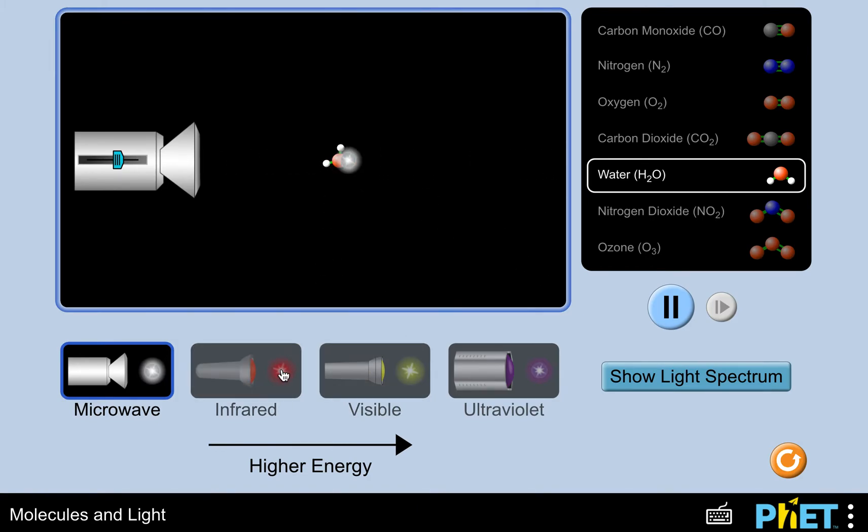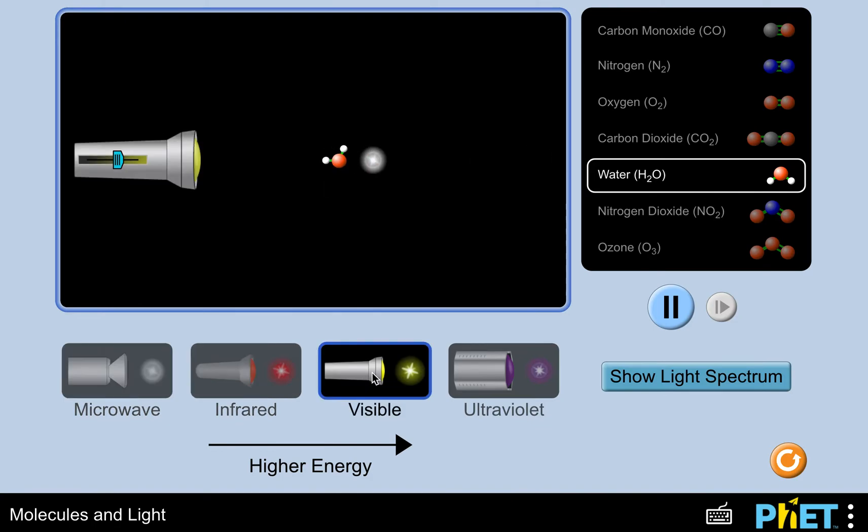If we go up the energy scale we already looked a little bit at infrared. Here's visible light and you notice largely in here visible light doesn't interact but I'm just going to go through back through the list and see if I see anything. So here's carbon monoxide.